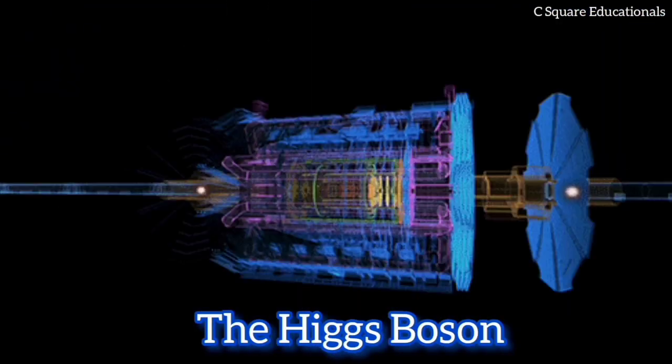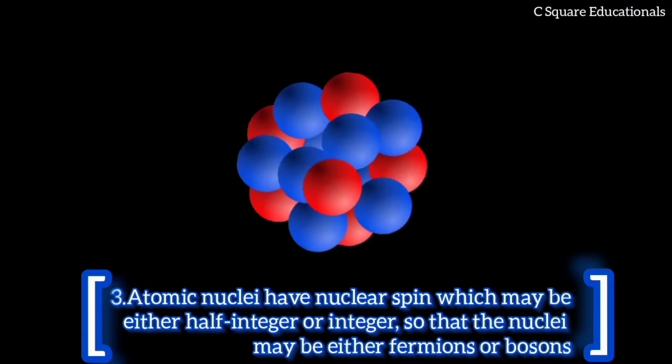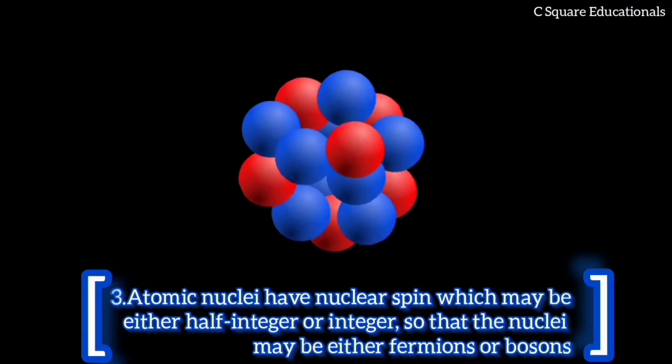And the last is that atomic nuclei have a nuclear spin, which may be either half-integer or integer, so that the nuclei may be either fermions or bosons.